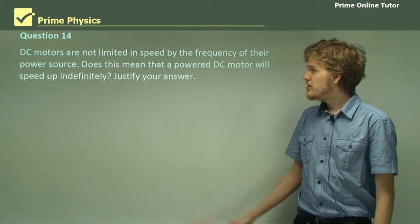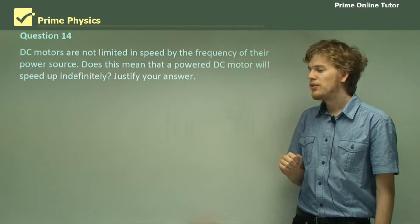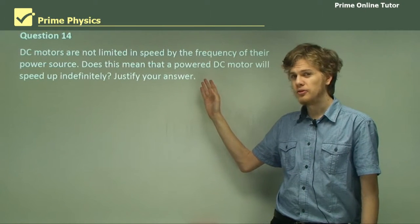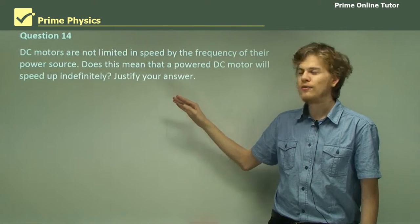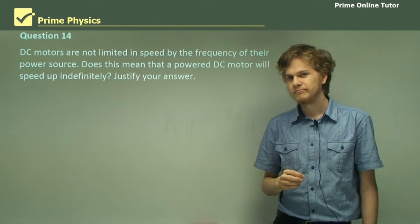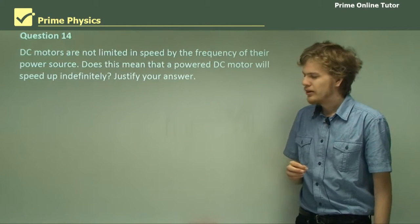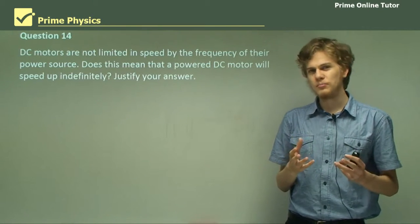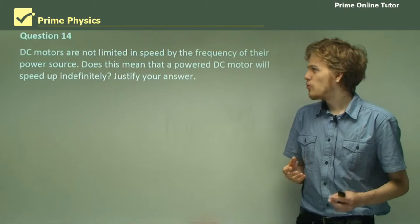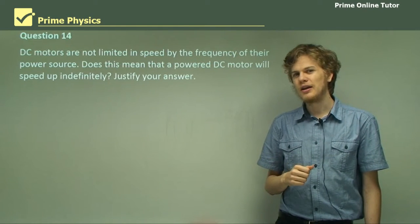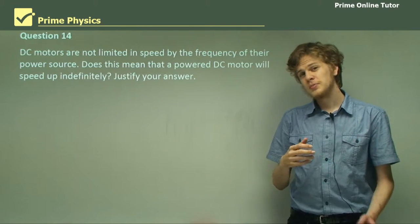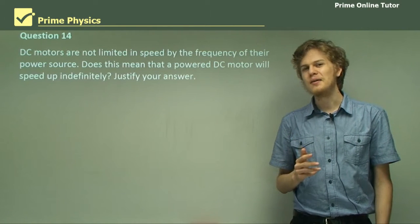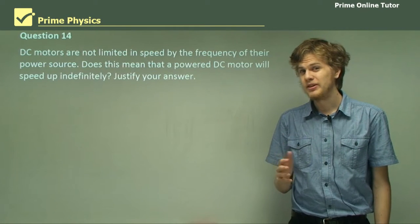Question 14. DC motors are not limited in speed by the frequency of their power source. Does this mean that a powered DC motor will just speed up forever? Justify your answer. Well, at first it seems like that might be a reasonable thing to happen, but we also know that it can't be true, because of course we never see a DC motor spinning at an infinite speed. So there must be something that stops it from speeding up. Well, what is it? It's back EMF. Remember that?